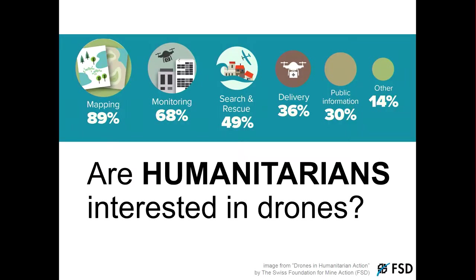I think drones are pretty cool tech and potentially very useful. The Red Cross is just starting to explore the humanitarian use of drones. There are a lot of groups like We Robotics and UAviators that have been doing great work in the field for a long time. There are also major institutions involved — for example, the government of Malawi and UNICEF recently partnered to launch Africa's first air corridor to test drones in humanitarian missions. One study found that humanitarians are overwhelmingly positive about drones, with top use cases being mapping, monitoring and search and rescue.